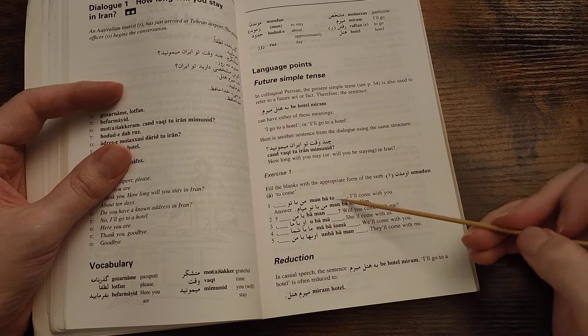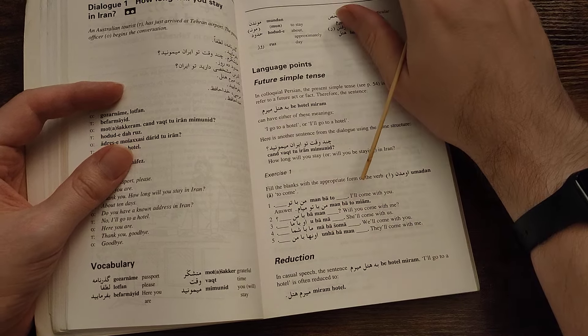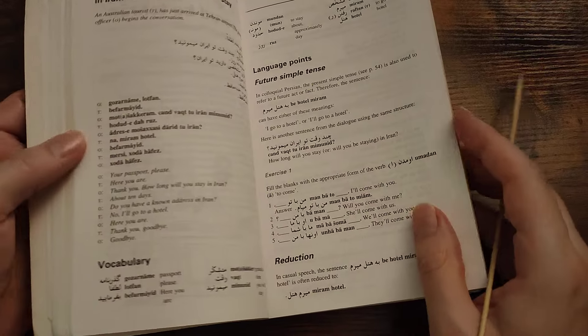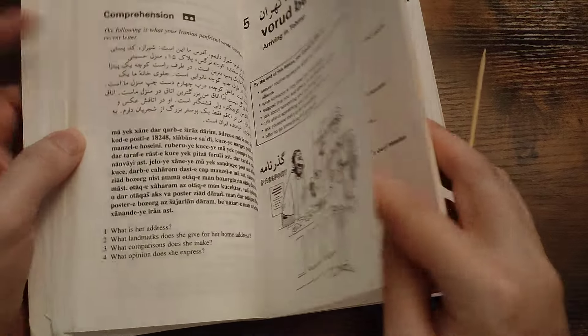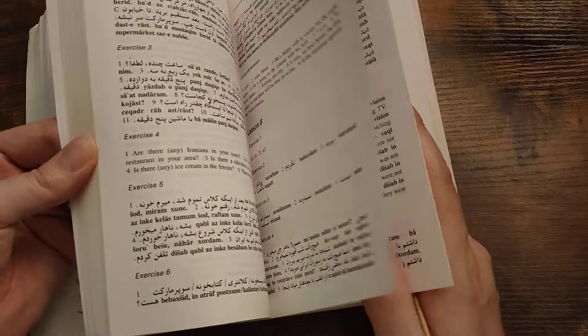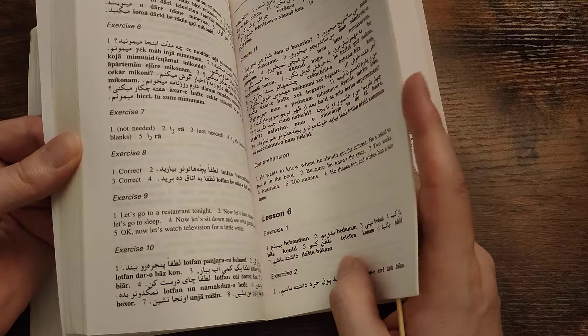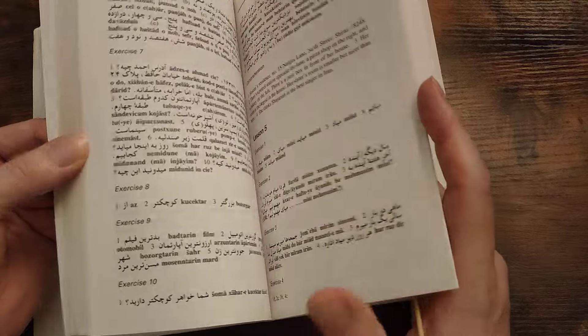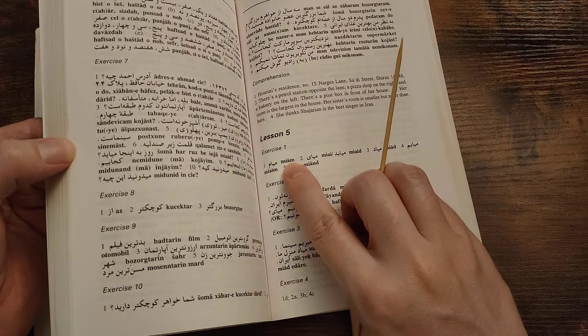This one's a bit irregular. So is it miyam? Let's find out. Man ba to miyam. Let's check exercise one in unit five. Miyam. Okay, I got it right.